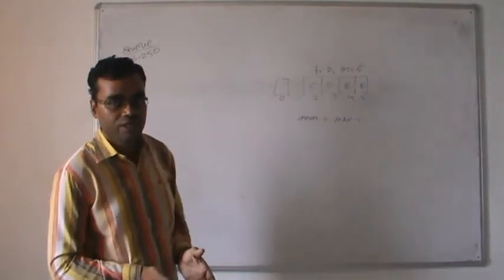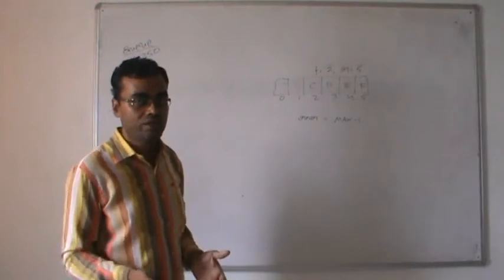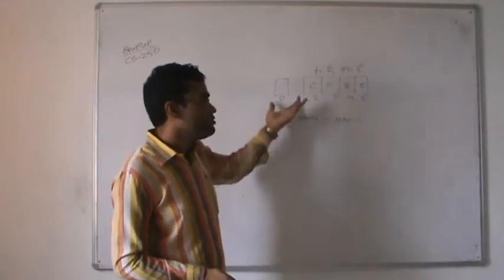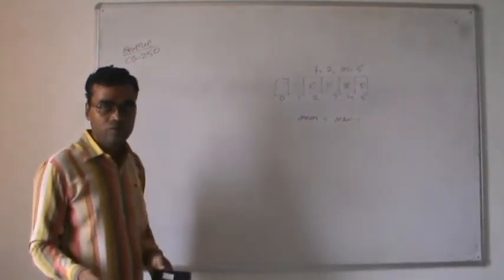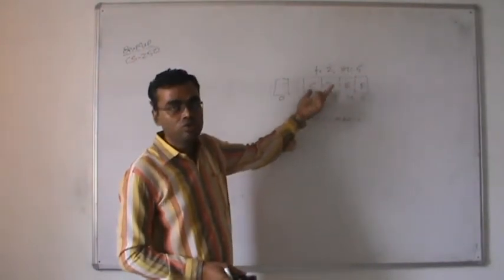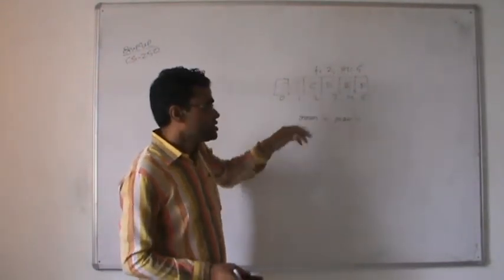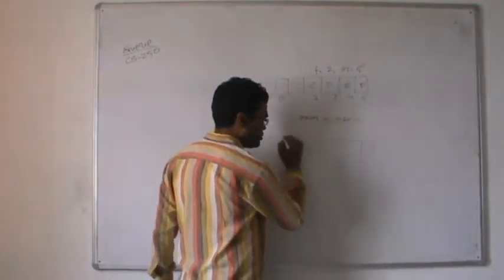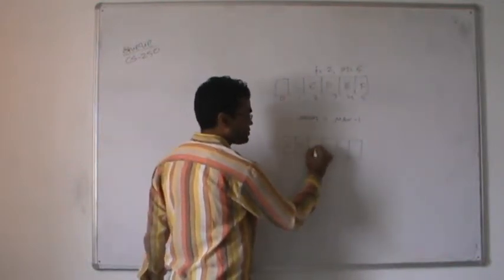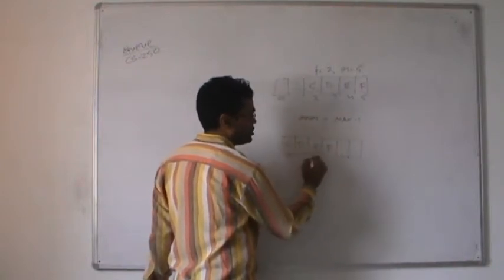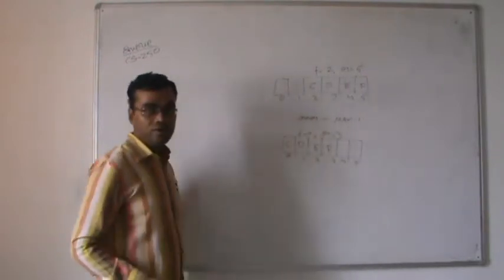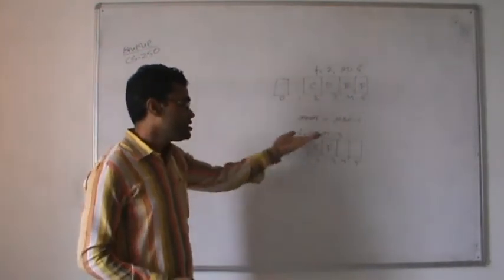There are two possibilities to handle this situation. One possibility is that we shift all the elements of the queue to the front side. After shifting, the value of front becomes zero and value of rear becomes three. This is one approach - shift all elements to the front side, to the zero position. However, this shifting takes time as we have to shift all elements one by one to the forward side, so it is a more time-consuming approach.